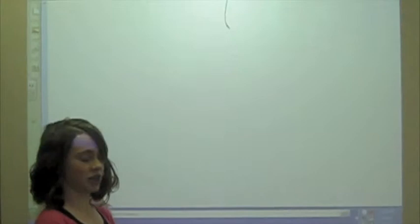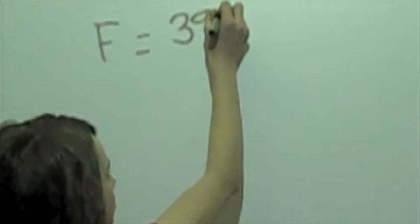Now, I'm going to show you how I calculated the force that I made. First, here I have the formula. F, force, equals mass, m, times acceleration, a. So, this is my handstand. My mass is 39 kilograms. And my acceleration was 9.1 meters per second squared.